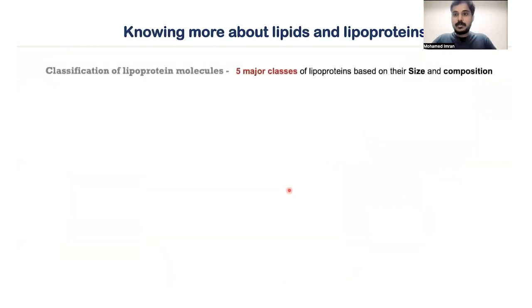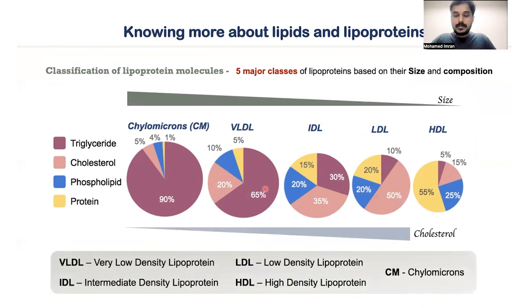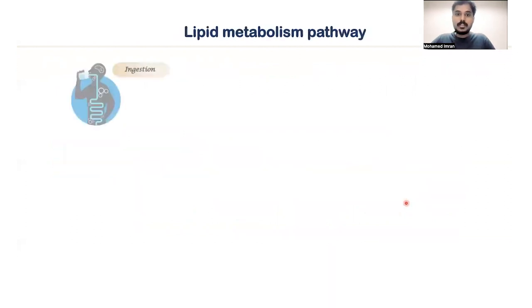There are five major classes of lipoprotein based upon their size and composition, starting with chylomicrons, which constitute around 90% of triglycerides and 5% of cholesterol. Next is very low density lipoprotein, which has 65% triglycerides and 20% cholesterol. Then intermediate density lipoprotein, low density lipoprotein, and high density lipoprotein. As you go across this series, the size of the lipoprotein decreases and the cholesterol content increases. LDL has the highest level of cholesterol, around 50%, compared to all other lipoproteins.